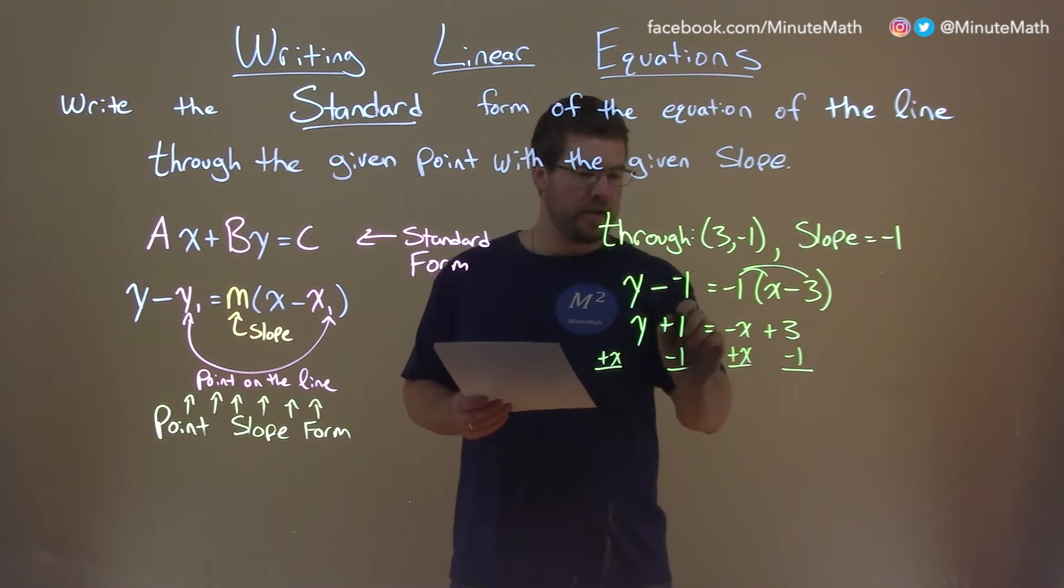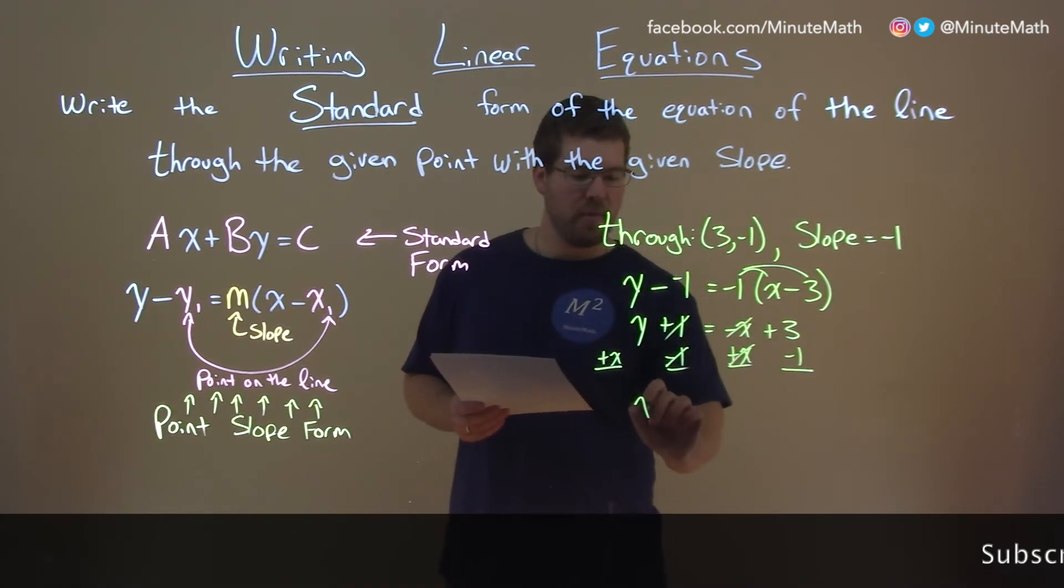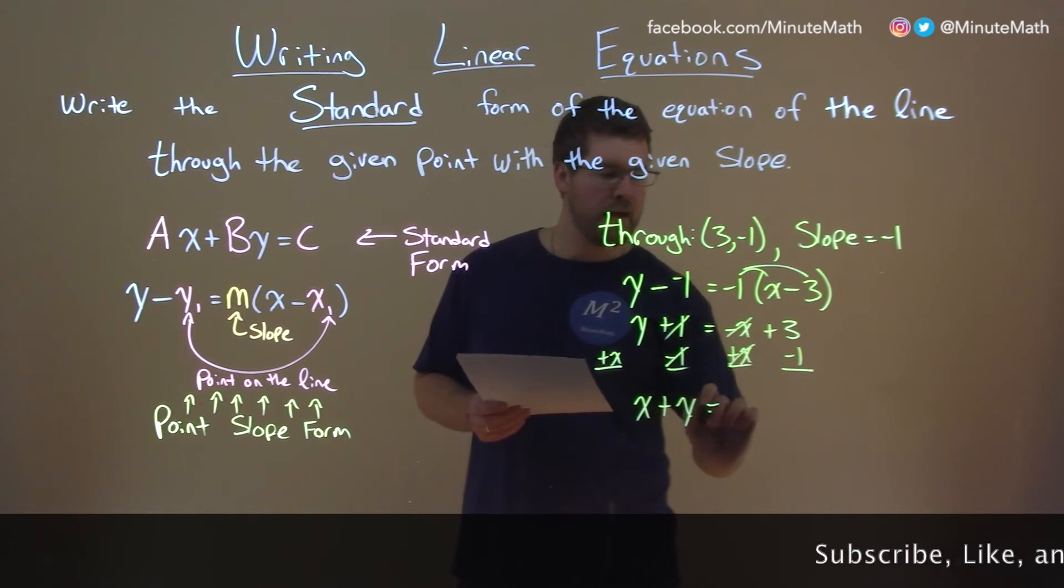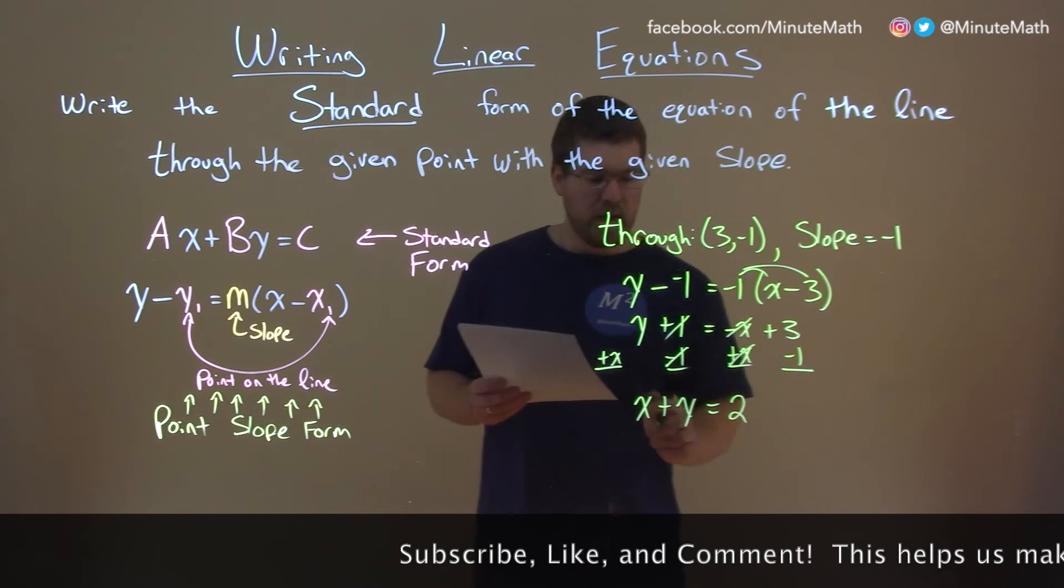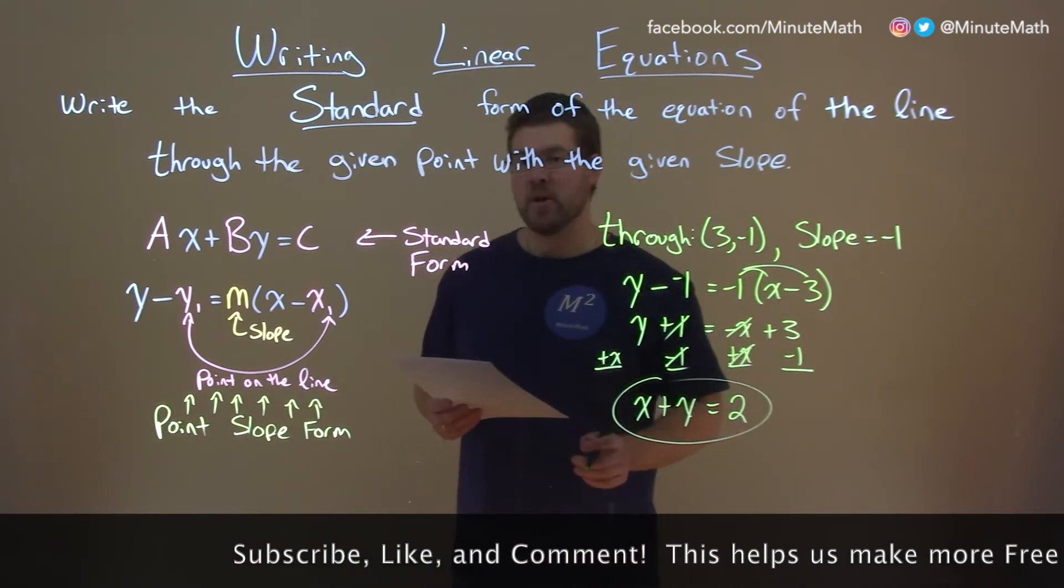we'll simplify here - this one cancels, these x's cancel. And we have x plus y on the left equals 3 plus a negative 1 or minus 1, which is a positive 2. And we have our answer in standard form.